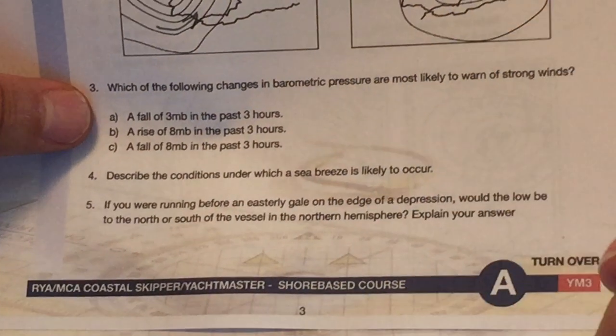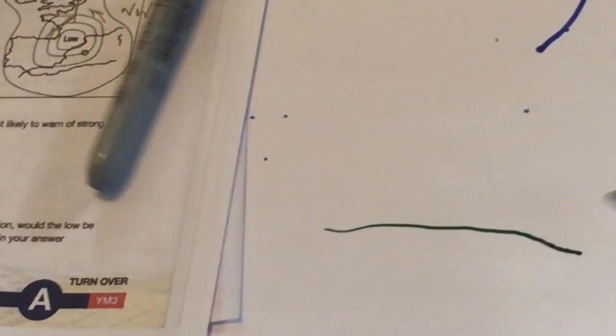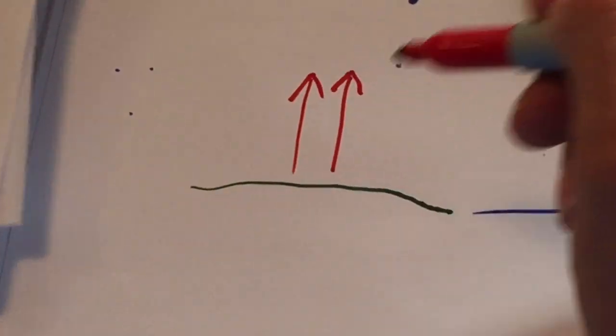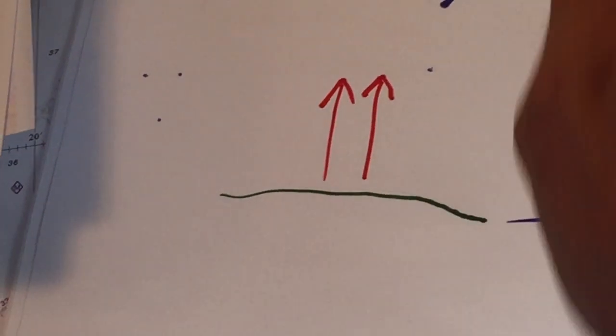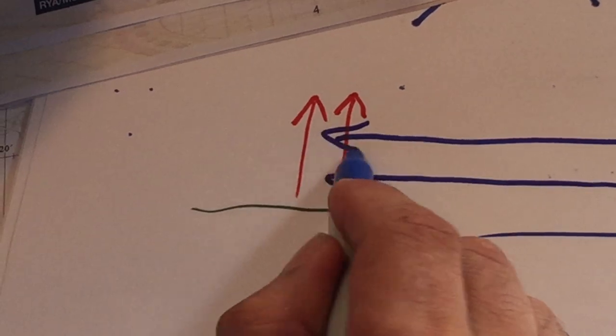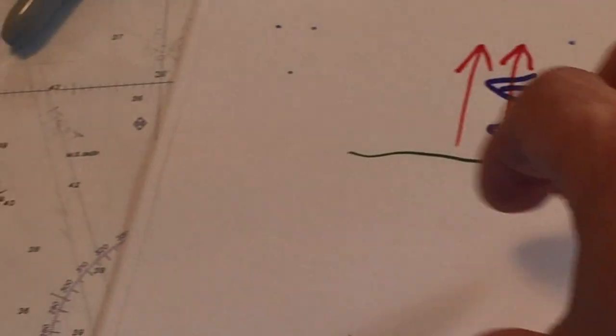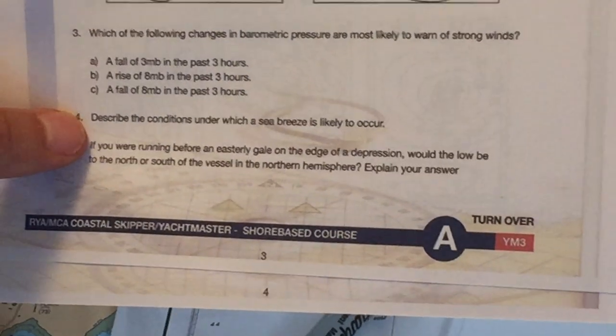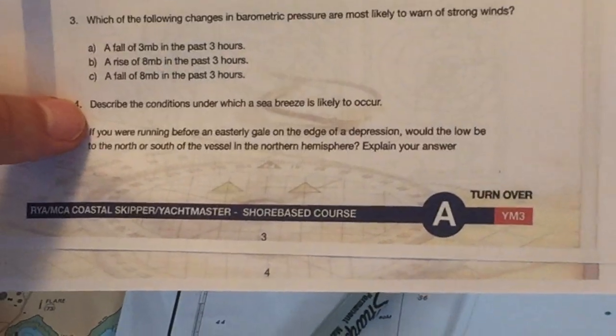Describe the conditions under which a sea breeze is likely to occur. Okay, sea breeze. Okay, that involves land. Okay, there's land, there's your ocean. Okay, and this will happen during the day, so heat rises because land heats faster than water. And then the air, the cooler air, comes in off the sea to replace this air here. And that's basically a sea breeze. Yeah, a sea breeze. And, of course, the opposite would happen. A land breeze would happen at night and it would just be the reverse.